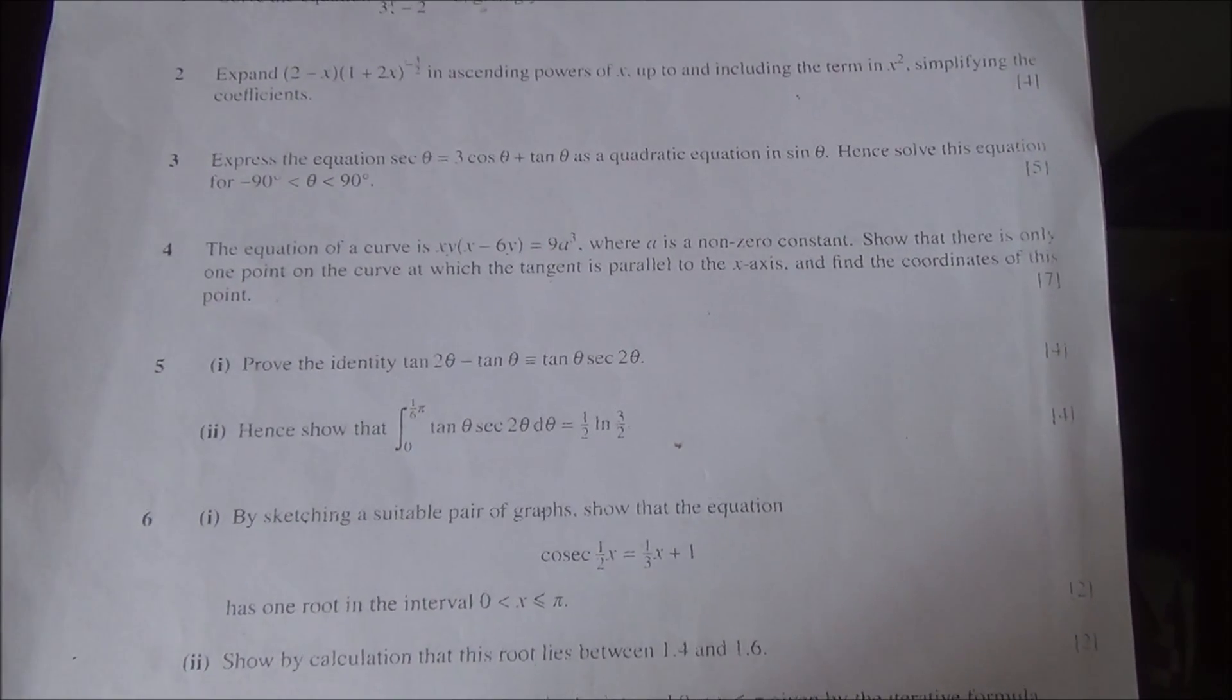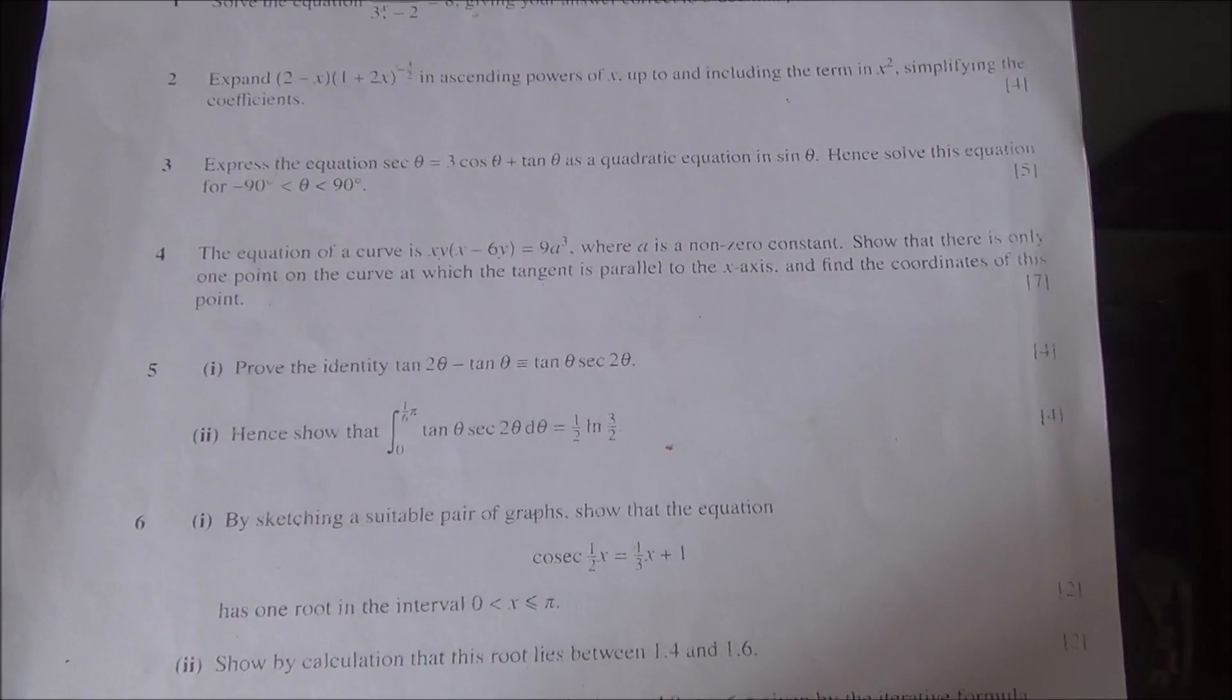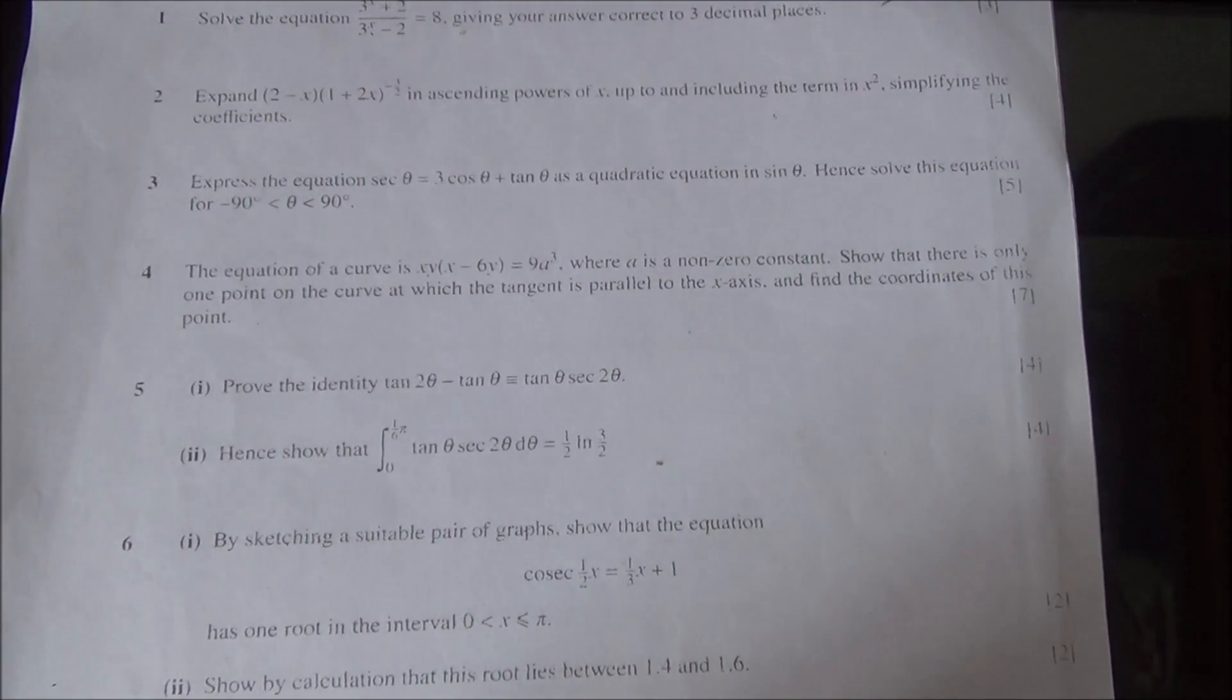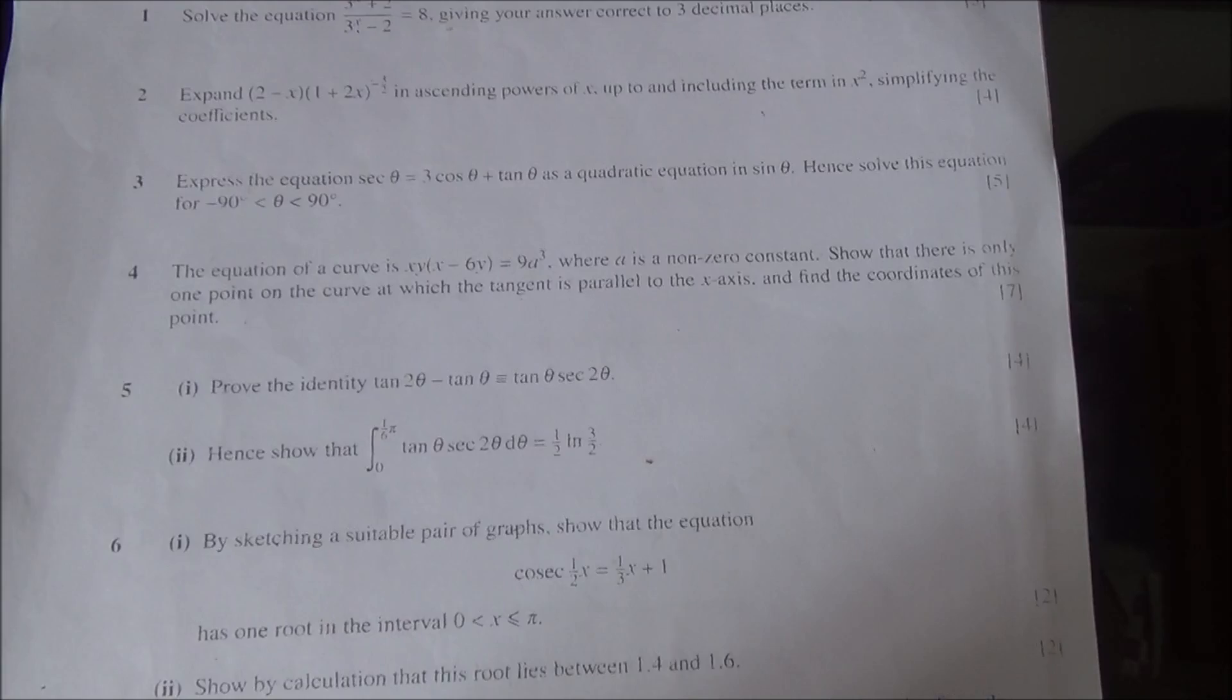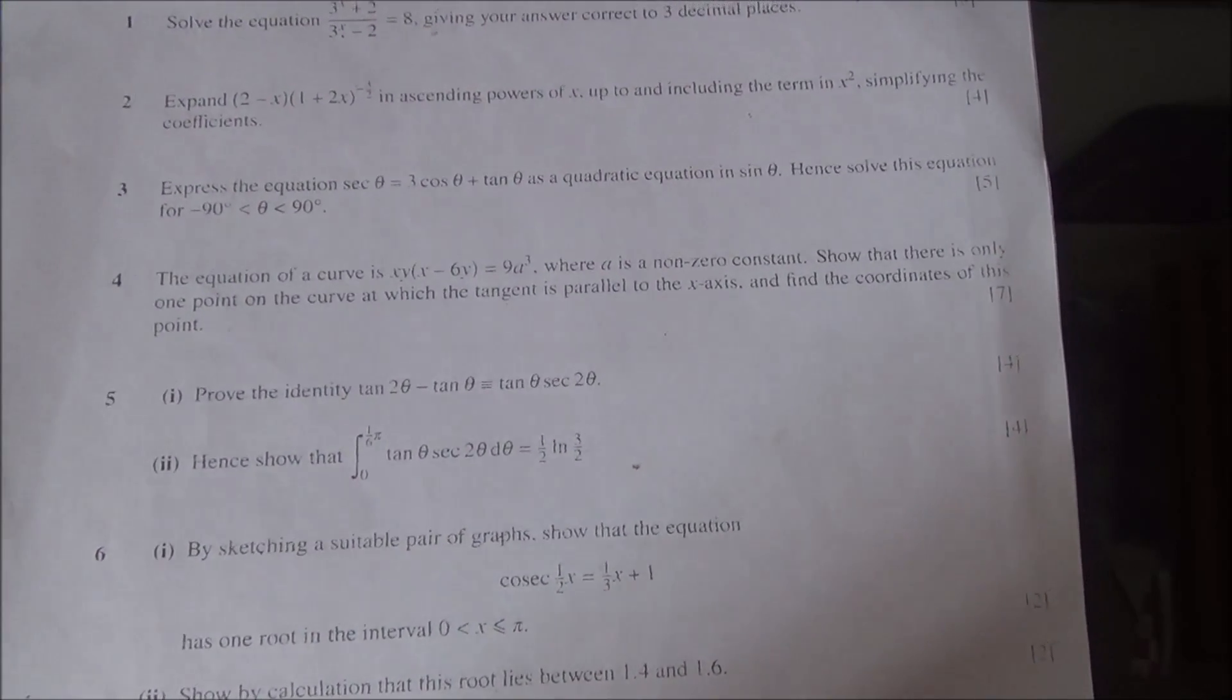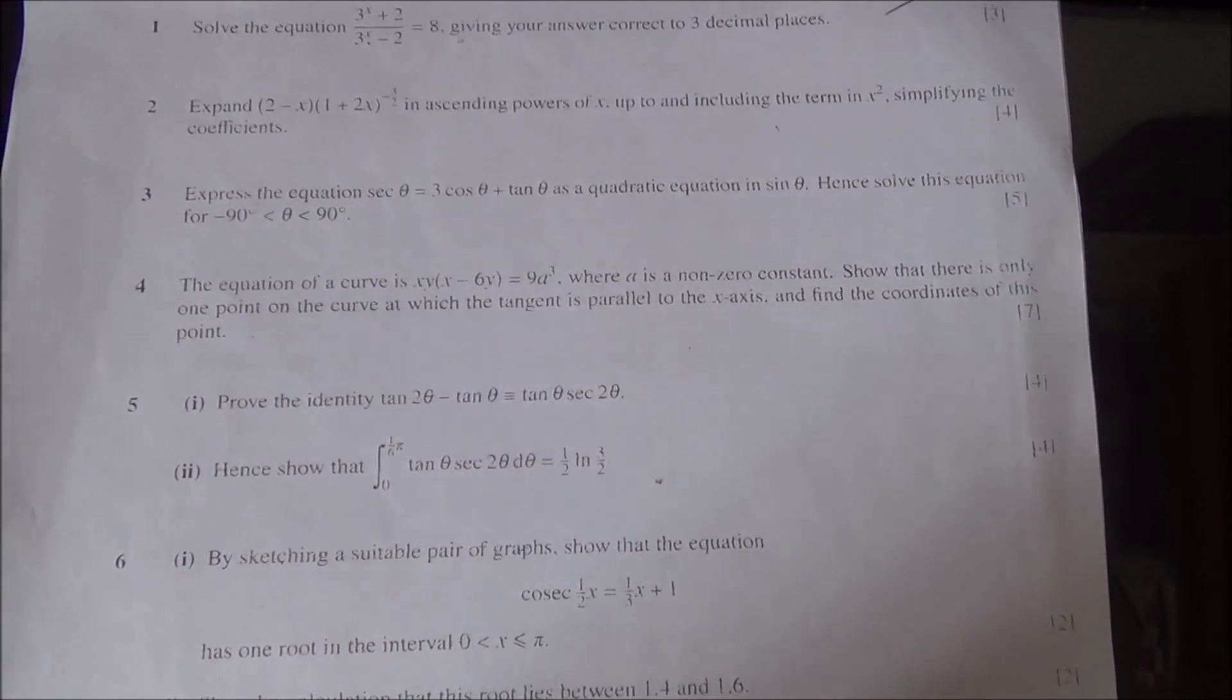Hi, the equation of a curve is xy times x minus 6y is equal to 9a cubed, where a is a non-zero constant. Show that there is only one point on the curve at which the tangent is parallel to the x-axis, and find the coordinates of this point.